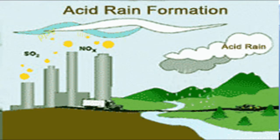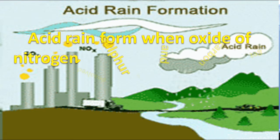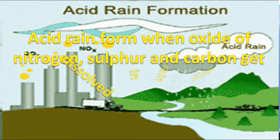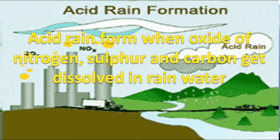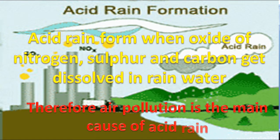Formation of acid rain. Acid rain forms when oxides of nitrogen, sulfur, and carbon get dissolved in rainwater. Therefore, air pollution is the main cause of acid rain.